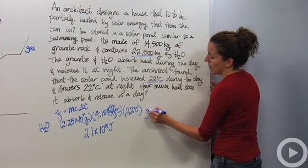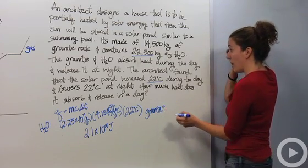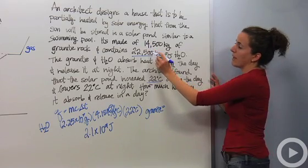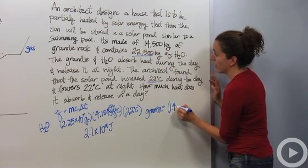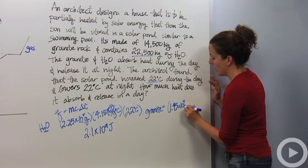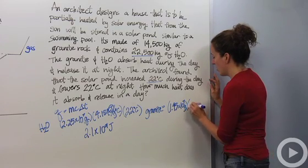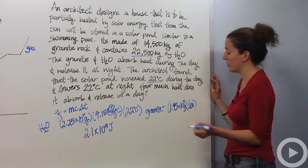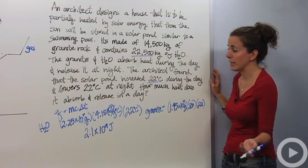Let's talk about the Q for granite because the pool is made up of water and granite. The mass of the granite is 14,500 kilograms, which is 1.45 times 10 to the 7th grams. The Q for granite, if you look at our table, is 0.803. And that's changing 22 degrees Celsius.